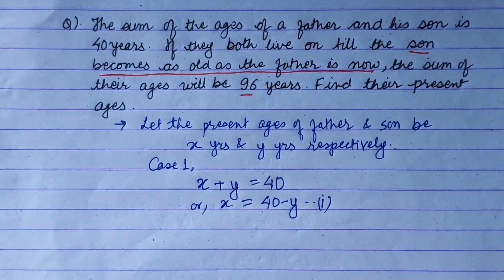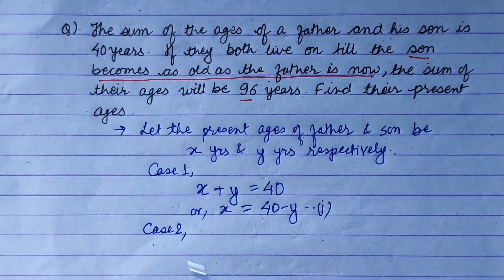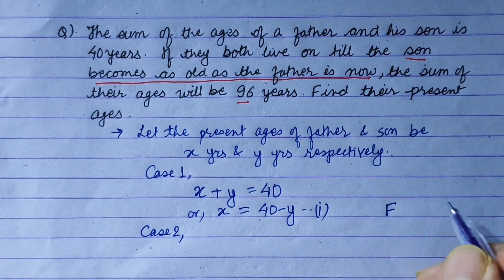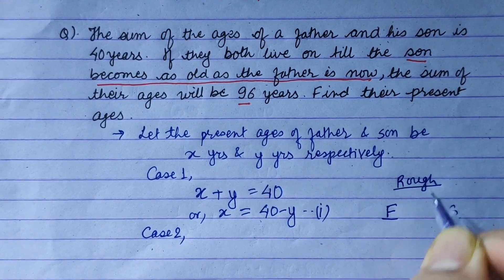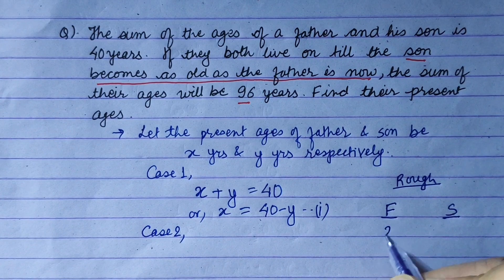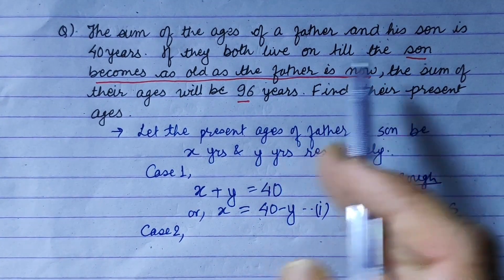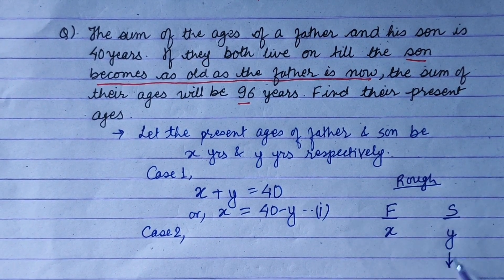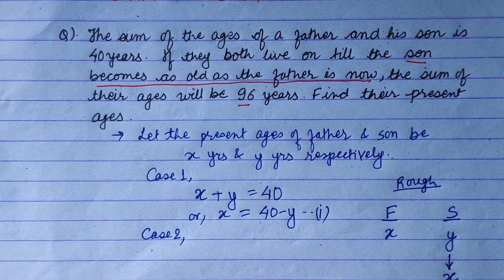Abha sabhan na confusion in a part chha — second part. Case 2 ma, eis kala father x mahanu, son y mahanu. Ahele bua x umeer chan, chora y chan. Question le kye bhanne bhandha: if they both live until the son becomes as old as the father is now — chora chan present ma father hoonye gari ka na, banda le y chan x un saare — kati barça pa chan? Yo duitiko ko difference barça.